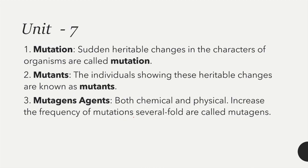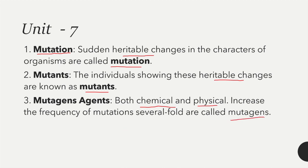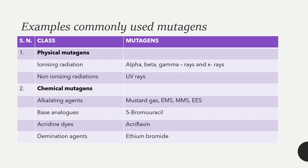The next unit is unit number 7 — mutation. Mutation is a sudden inheritable change in the characters of an organism. Individuals showing these heritable changes are known as mutants. Both chemical and physical agents are responsible for mutation. The mutation-causing agents are called mutagens.